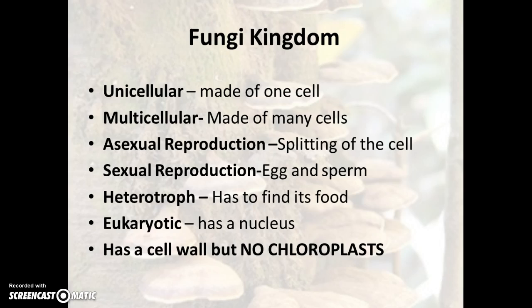The fungi kingdom is very diverse. Fungi can be unicellular — made of only one cell, like the yeast from our first lab — or multicellular, made of many cells, like mushrooms. If they're unicellular, they reproduce asexually; if they're multicellular, they reproduce sexually.